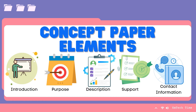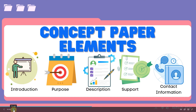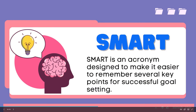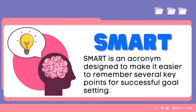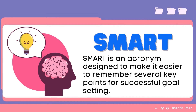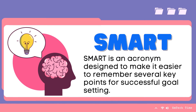Last but not the least is Contact Information — this includes information on how the group can be contacted. Here, we are going to utilize SMART. When we say SMART, it is an acronym designed to make it easier to remember several key points for successful goal setting.